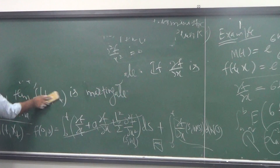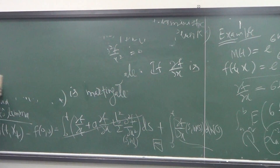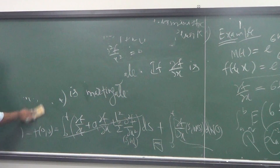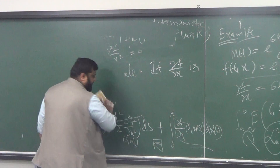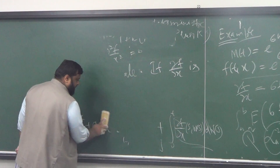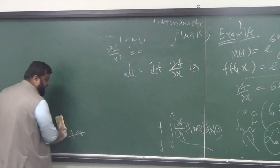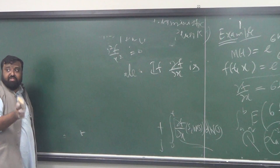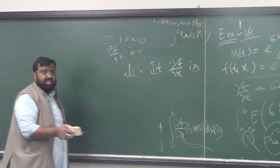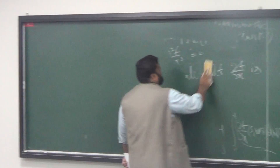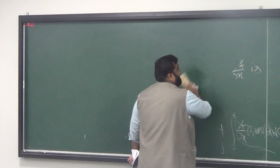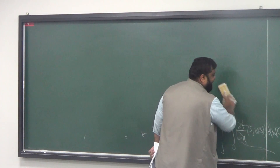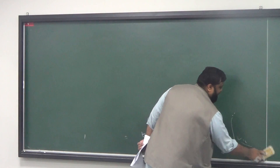Alright, so Feynman-Kac formula. And this Feynman is the same Feynman — the physics guy, the crazy guy. He's everywhere. He's like the boss — everywhere.